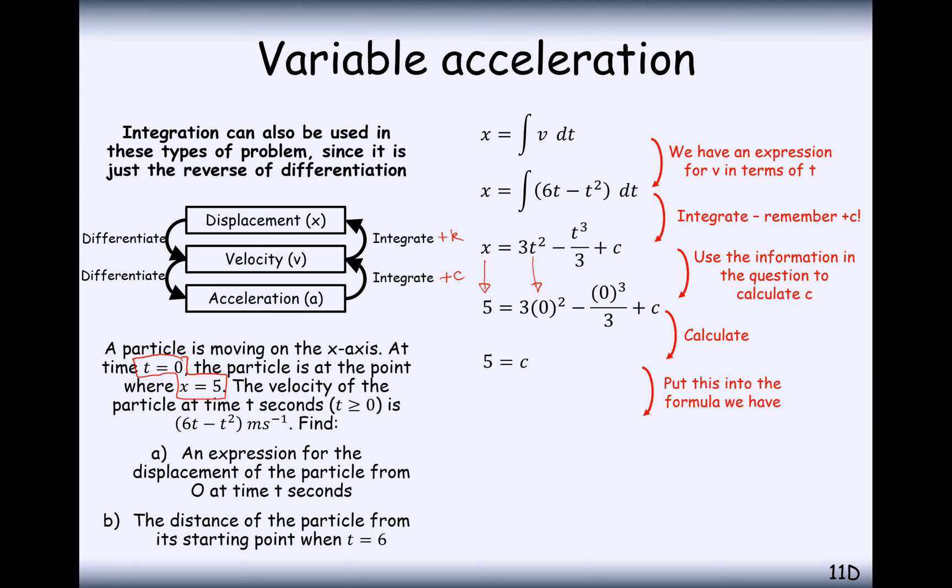Our function for displacement, therefore, is 3t squared minus t cubed over 3 plus 5. So that's how we know the position of our particle along the x-axis. That's part A complete.